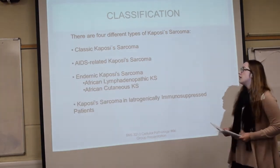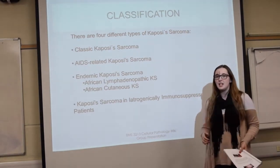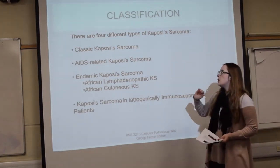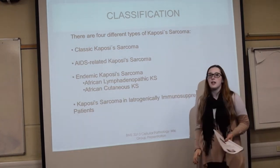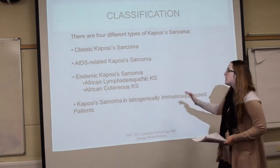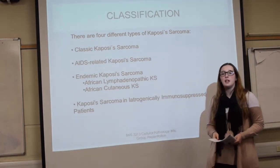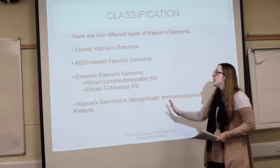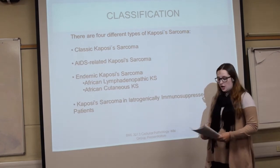The third type is endemic Kaposi's sarcoma, which is seen in Africa. There are two subtypes: the lymphatic KS, seen in children under 10 years old, and the cutaneous KS, seen in men between 20 and 50 years old. This endemic Kaposi's sarcoma is not related to HIV.